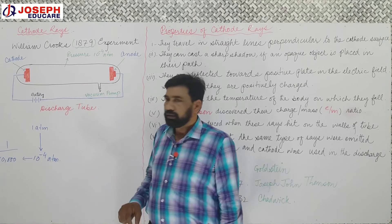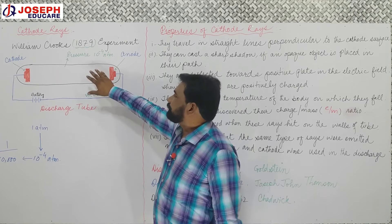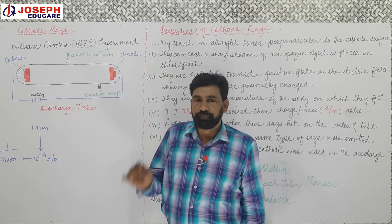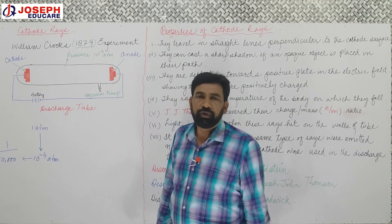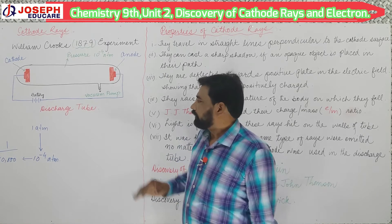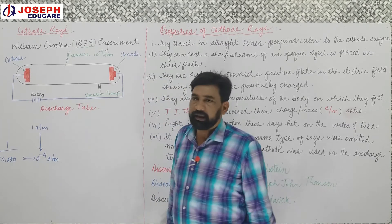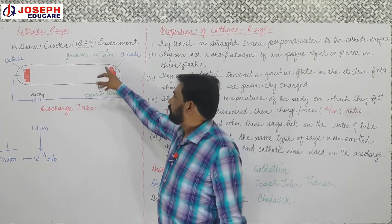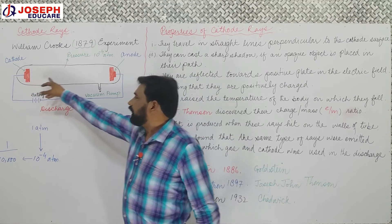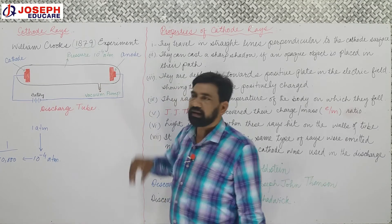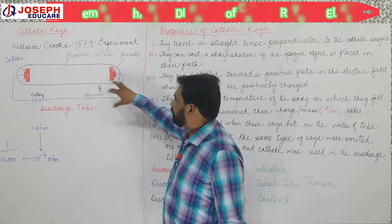But the experiment was further refined. When the pressure was reduced to 10 to the negative 6, they first noticed some black spots near the cathode. After that, it was increased to 10 to the negative 4, and the whole tube became black. But here, some light was observed, because the rays originating from here, when they struck this surface, light was seen there.